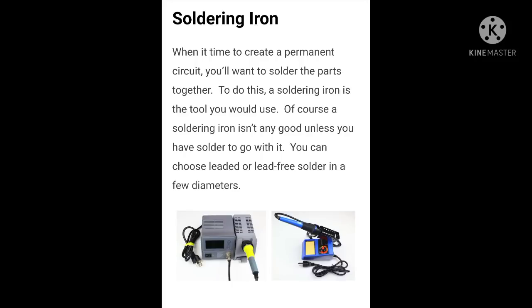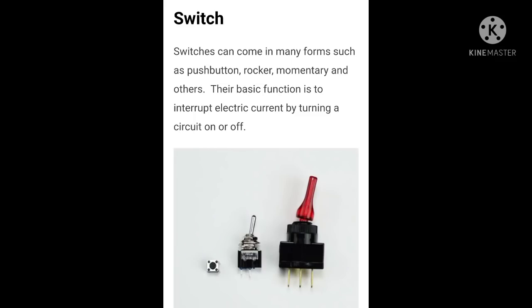Soldering iron — when it is time to create a permanent circuit, you will want to solder the parts together. It is very easy to use. Switch — switches can come in many forms such as push button, rocker, etc.